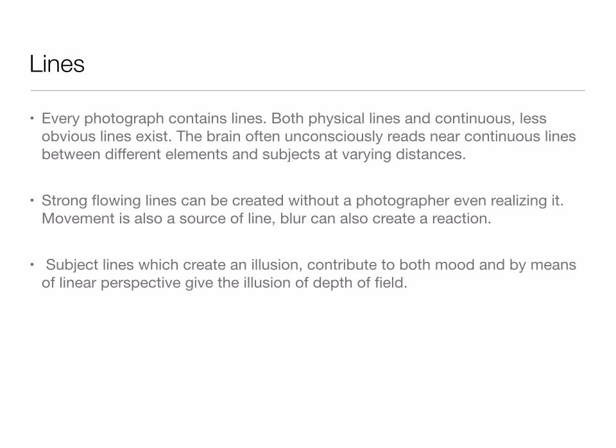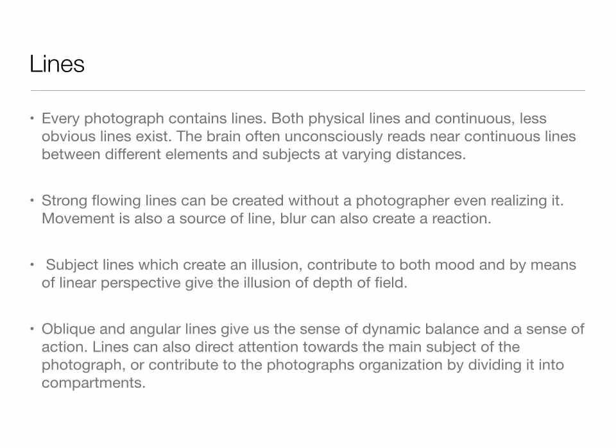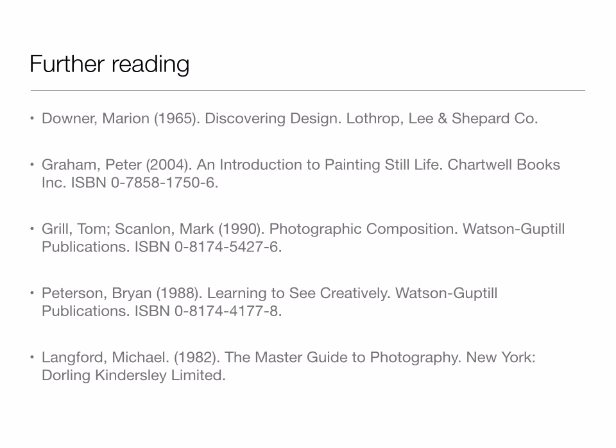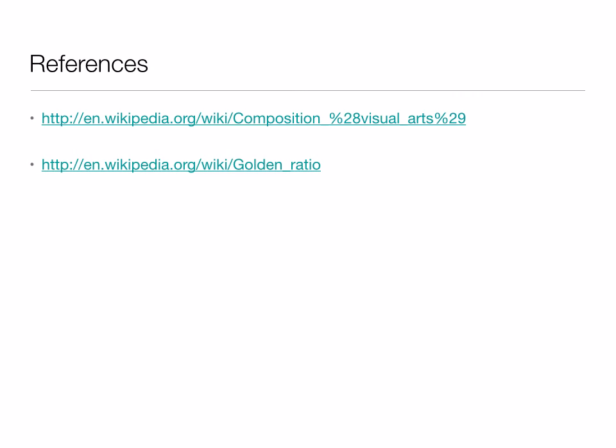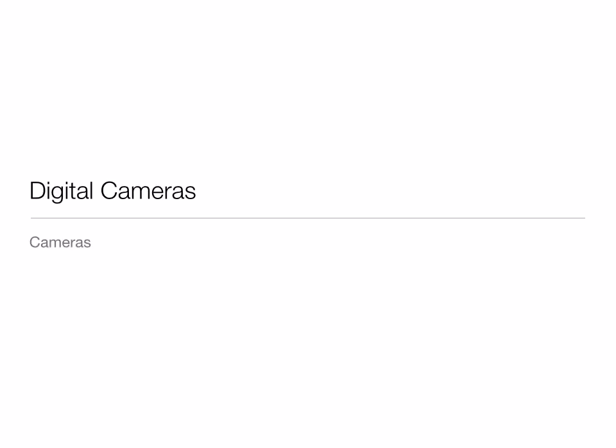Subject lines, which create an illusion, contribute to both mood and, by means of linear perspective, give the illusion of depth of field. Oblique and angular lines give a sense of dynamic balance and action, and can also direct attention toward the main subject or organize the photograph by dividing it into compartments. Photography is one of my favorite styles of art, and if you love film, you love photography — because film is just a series of still pictures linked together. And that will be the end, guys — have a good day.